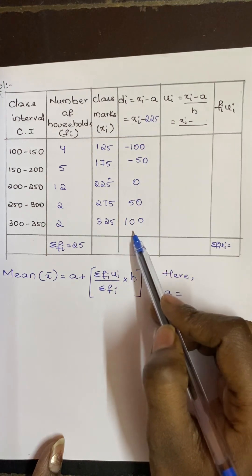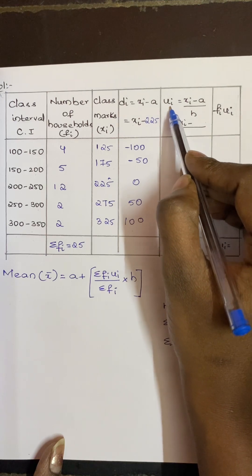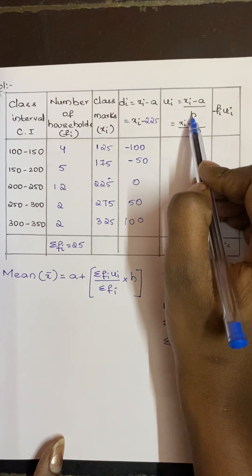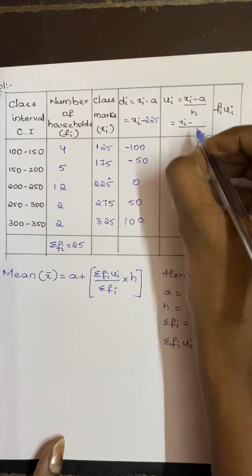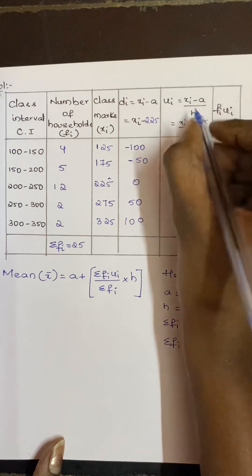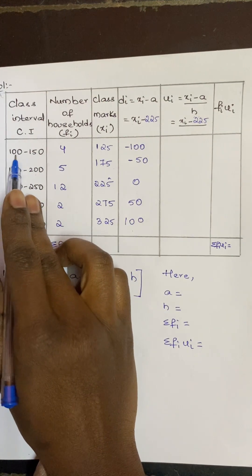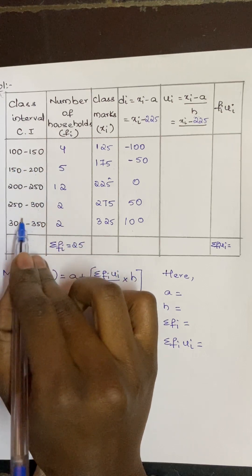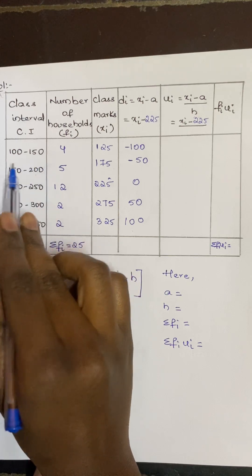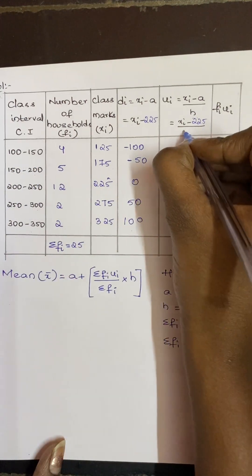Now next, what is ui? ui = (xi - a)/h. So a value is 225. What is h value? h value is the difference between the two class intervals. Now what is the difference between 100 and 150, 150 and 200, 200 and 250? It is 50.